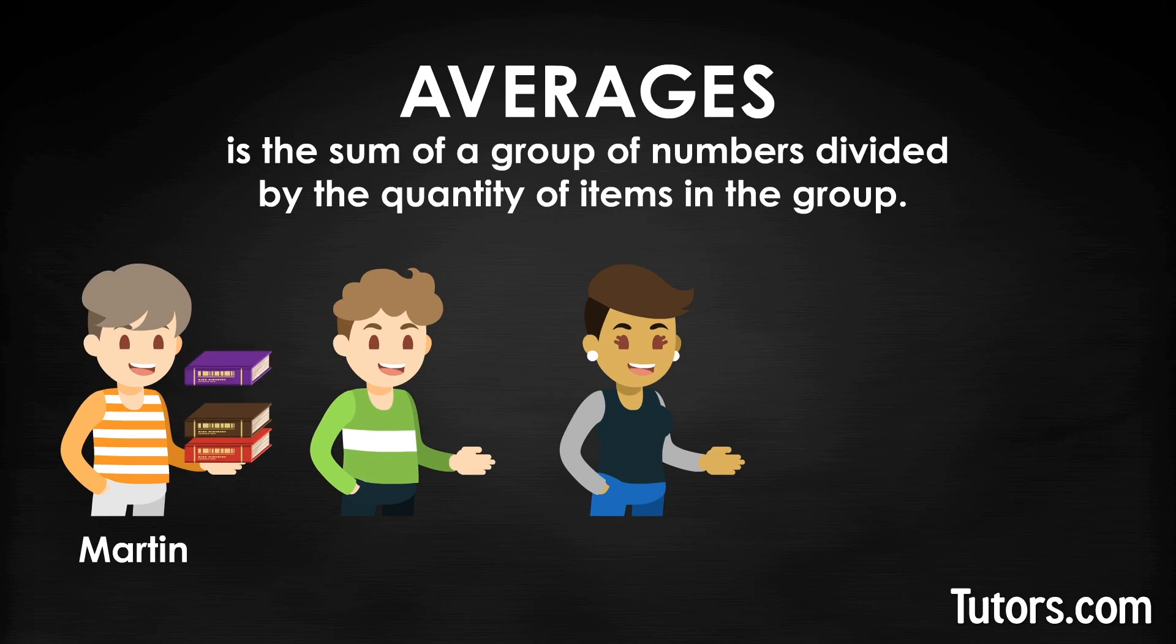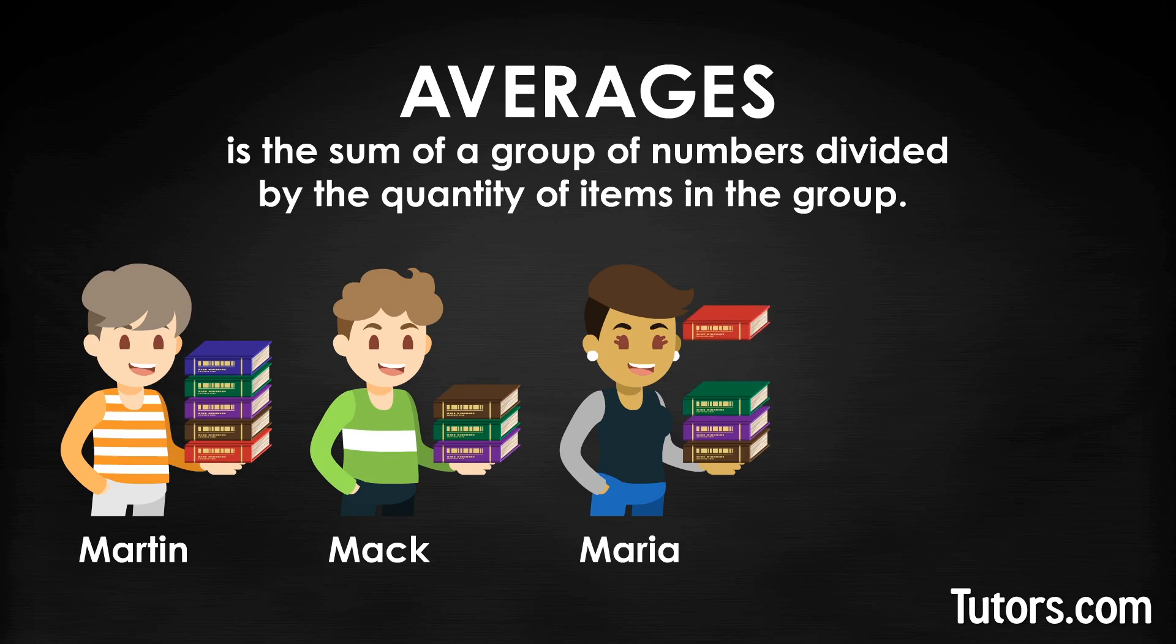Martin is holding five books. Mac is holding three books. Maria is holding four books. Five plus three plus four equals twelve books being held by three people. Twelve books divided by three people equals an average of four books each.